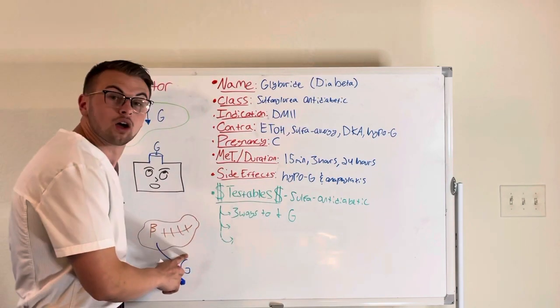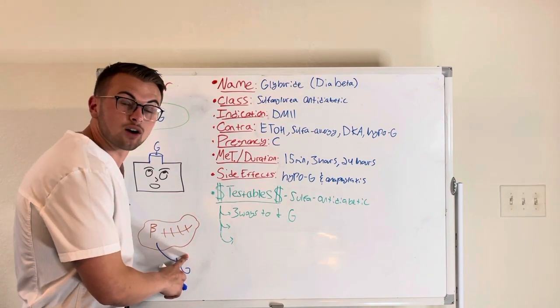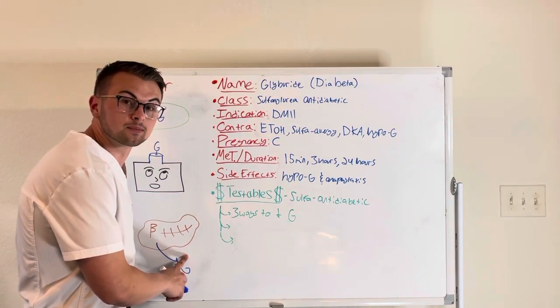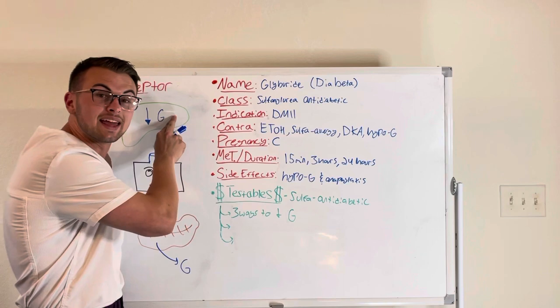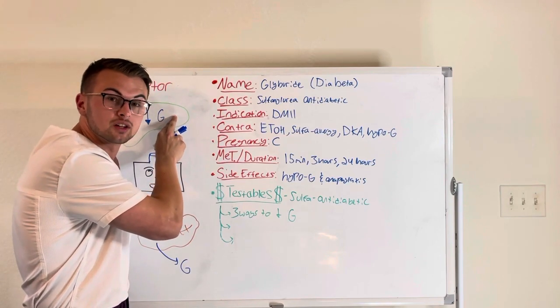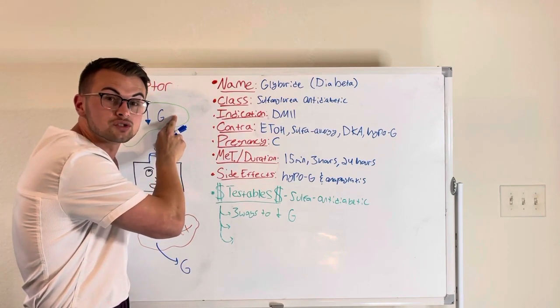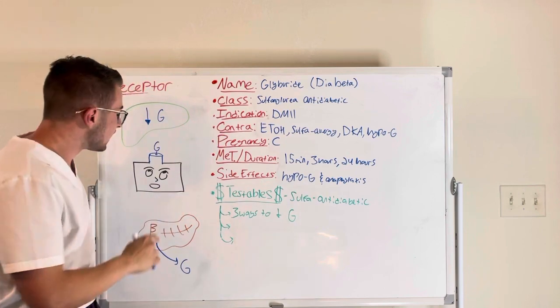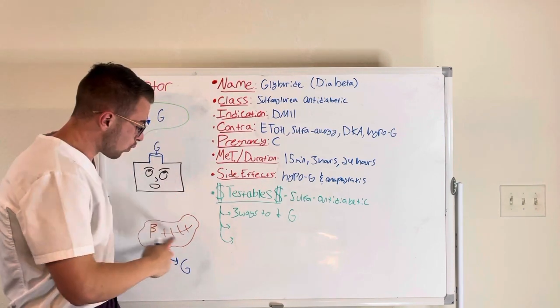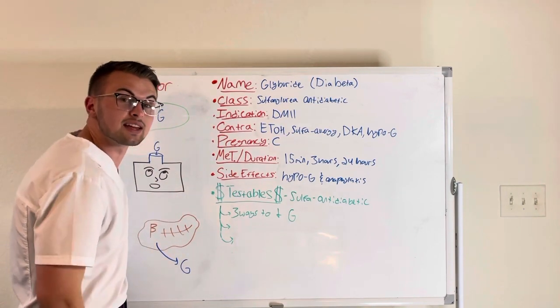It will first cause a beta cell release of insulin, then it will inhibit glucose production in the liver, aka gluconeogenesis, and lastly, it will make our cells more sensitive to the insulin.